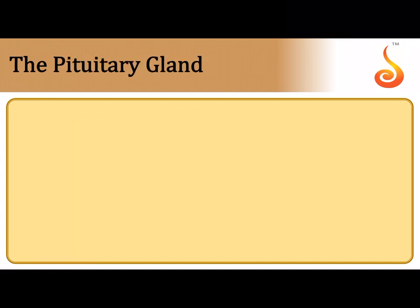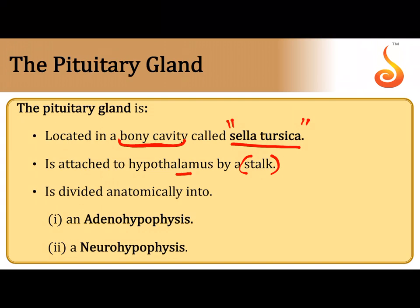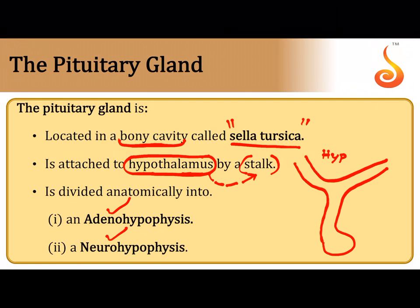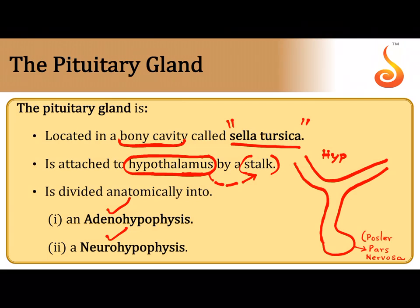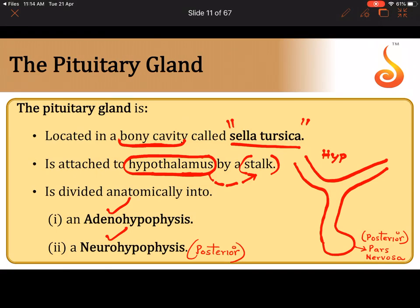The pituitary gland is situated in a bony cup-shaped depression at the floor of the cranium called the sella turcica, formed from the sphenoid bone. It is attached to the hypothalamus by a narrow stalk called the infundibulum. The pituitary gland has two parts: adenohypophysis and neurohypophysis. The bulged posterior part is called pars nervosa, which is the posterior pituitary or neurohypophysis.